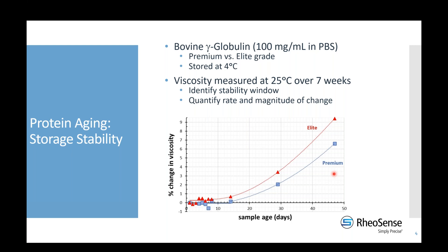We've previously presented data monitoring kinetics over a long time period — protein aging and storage stability. We looked at a model protein, bovine gamma globulin, at elevated concentration stored in a refrigerator at 4°C. We measured viscosity over the course of seven weeks, which allowed us to identify a stability window and quantify the rate and magnitude of change over time.